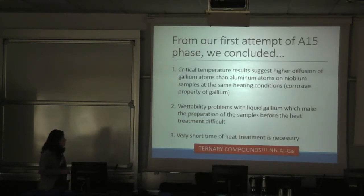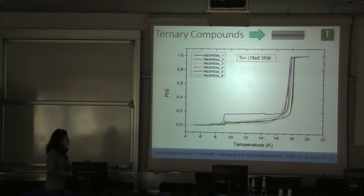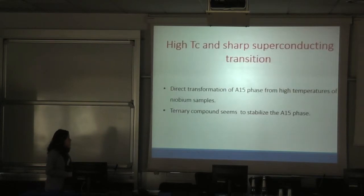For our first attempt of A15 phase, we can conclude critical temperature results suggest higher diffusion of gallium atoms than aluminum atoms on niobium samples under the same heating conditions. This is consistent with the corrosive properties of gallium. Also, we have wettability problems with liquid gallium, which makes the preparation of the sample before heat treatment difficult. We see that very short time for heat treatment is necessary. For this, we propose the ternary compounds. We found very sharp and high transition. The highest transition we measured is 18 Kelvin with width of 0.35 Kelvin. This is a great result.